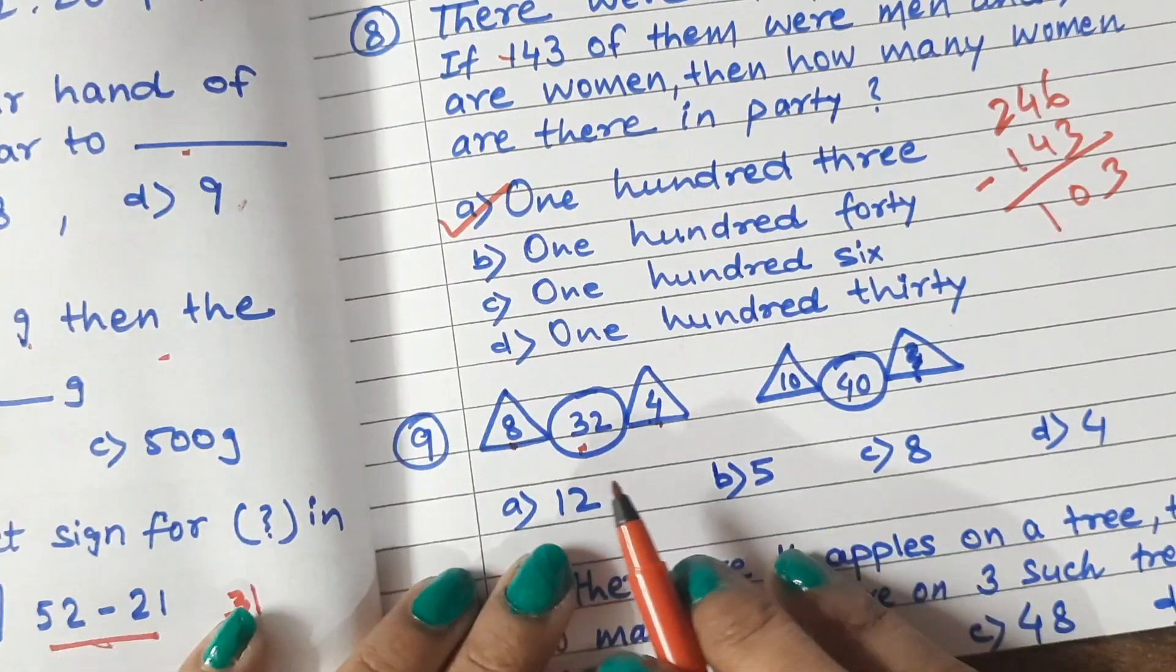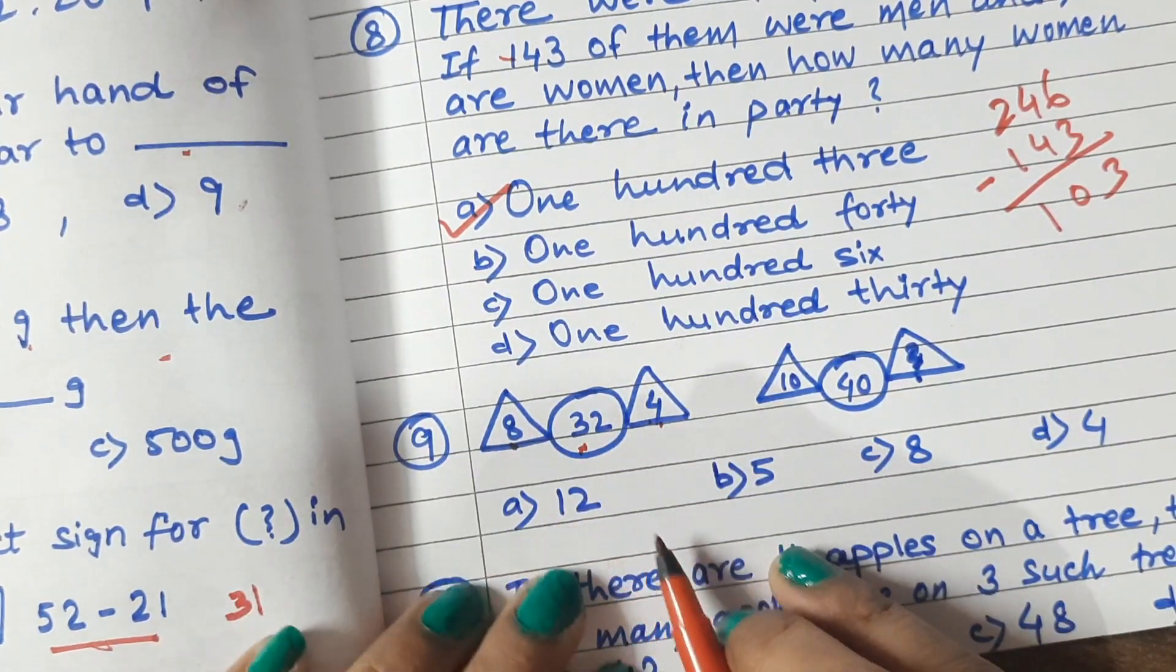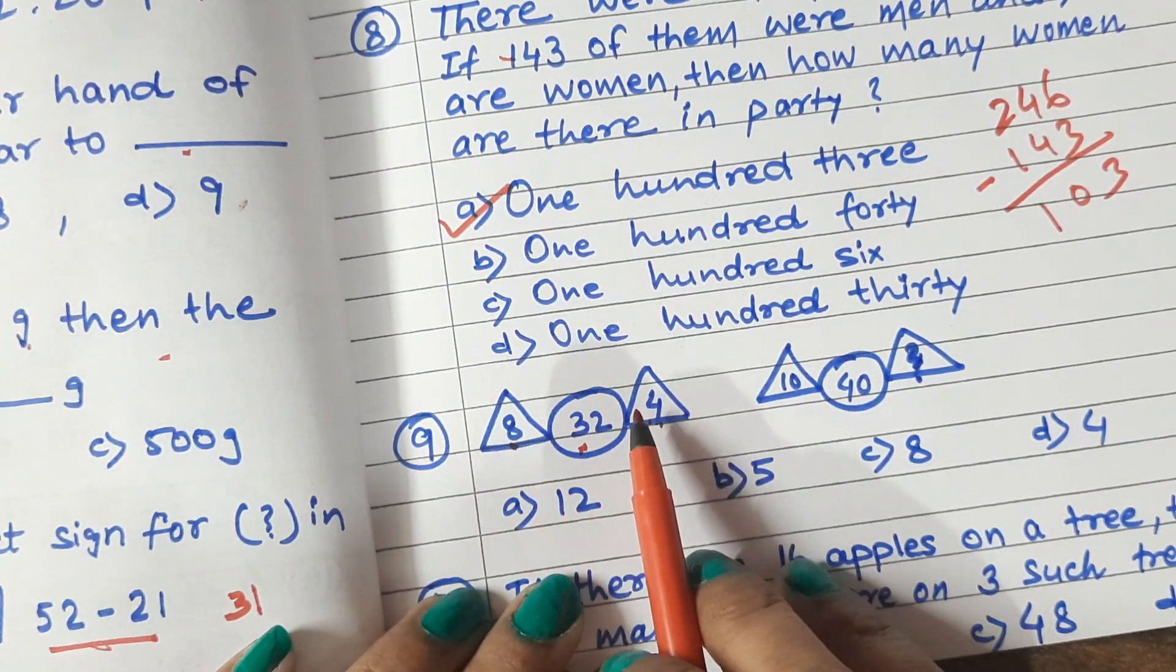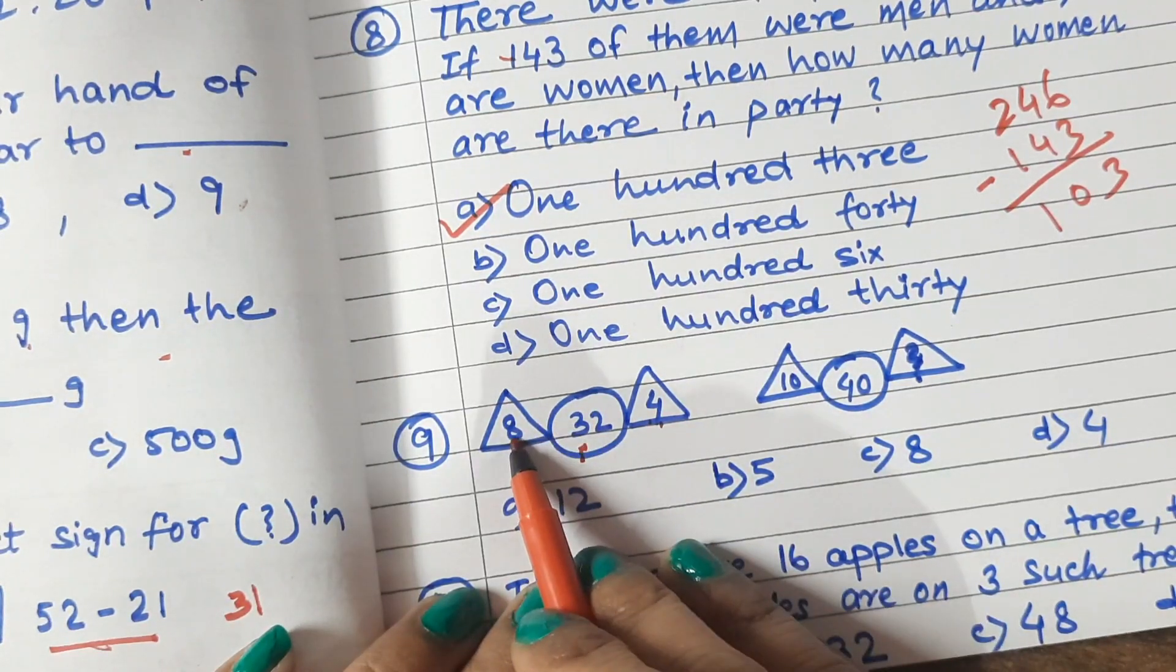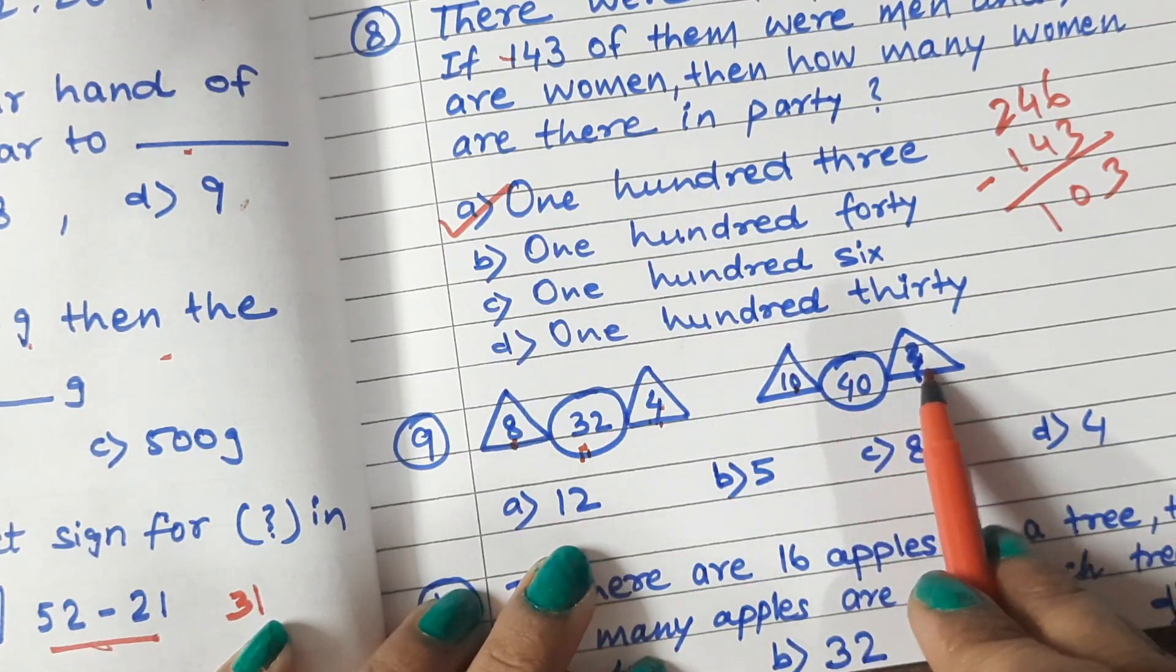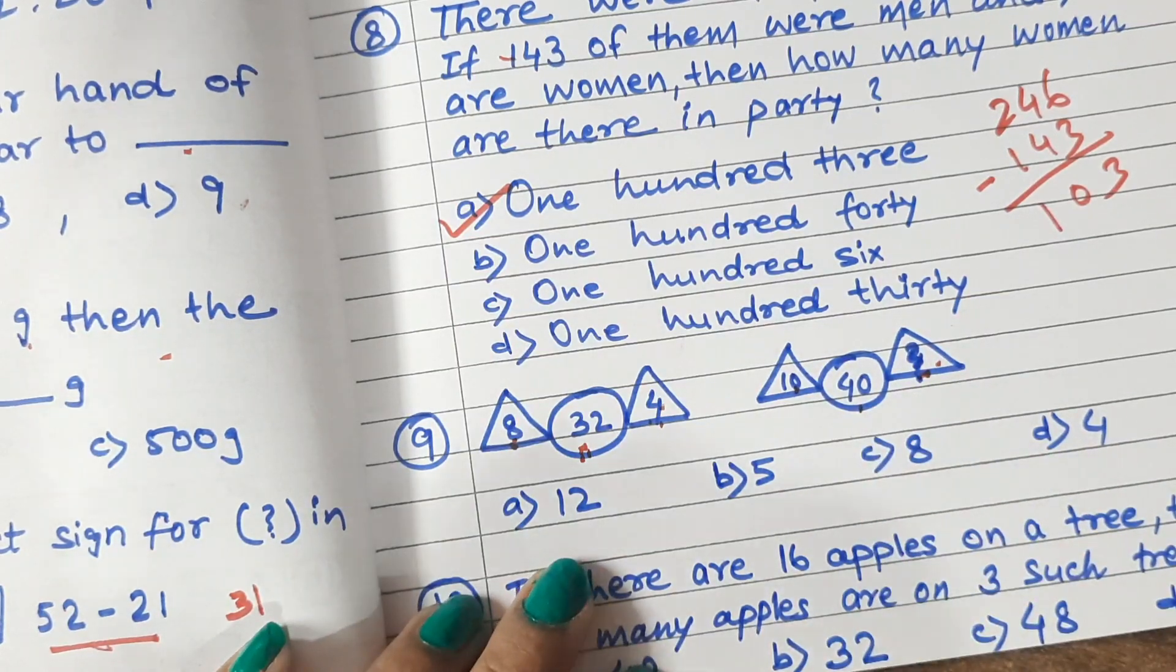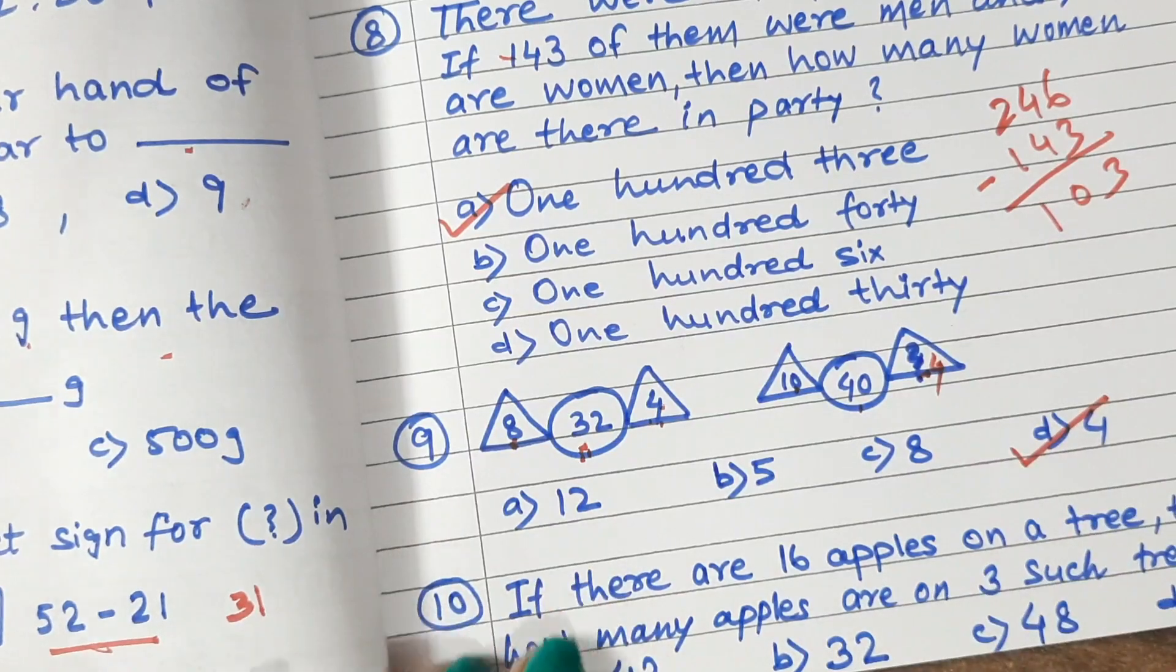Question 9: Now we have to observe the pictures. Observe these numbers. This is a very interesting question of analytical reasoning. Here the number is written in the triangle. There is a relation between the circle and the circle. What? 8 four times is 32. So what will happen here? 10 is here and here is blank. So which number is written in this question mark? Which number will be written in this question mark? So 10 four times is 40. So here is 4. This is done.